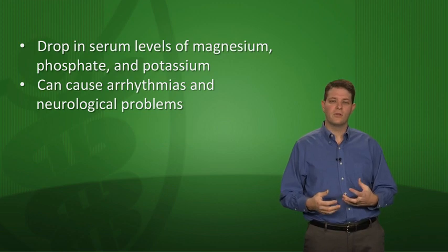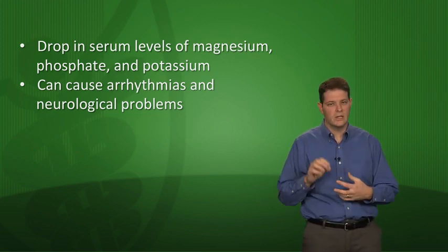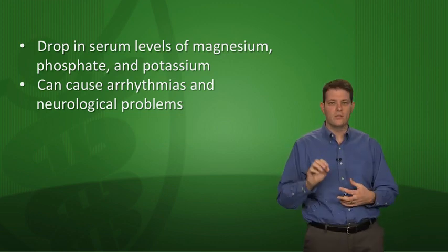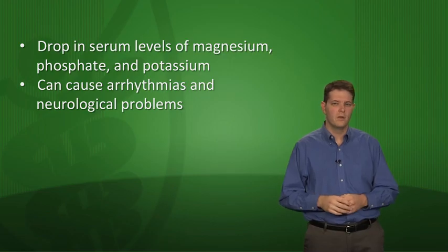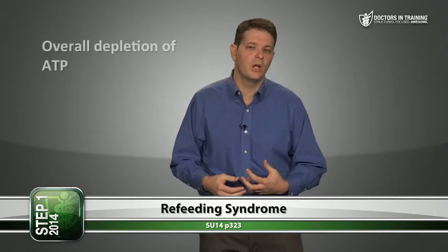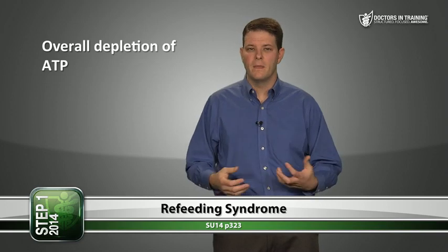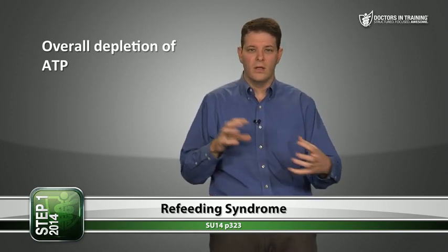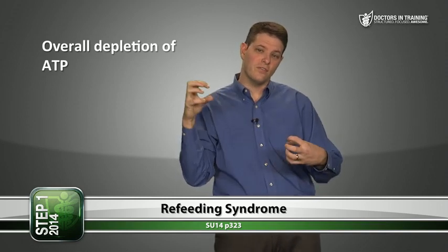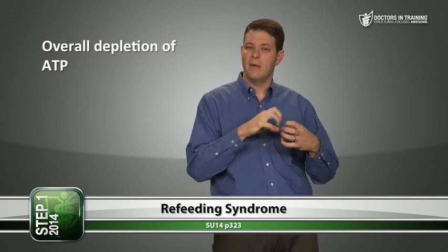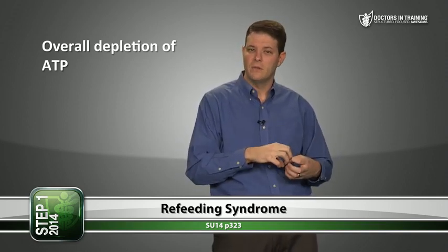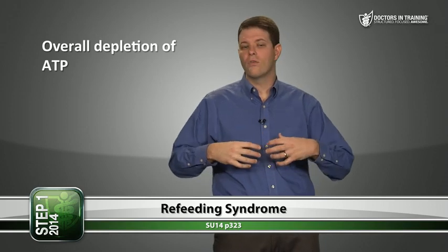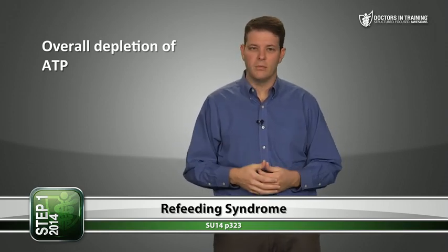When you feed someone after a prolonged fast, you need to start low and go slow, and monitor their electrolytes very closely. During refeeding there's also an overall depletion of ATP as cells phosphorylate things to trap them inside — as cells bring in glucose, they phosphorylate it, using up ATP. The cells may end up with an overall depletion of ATP, which is a serious problem.